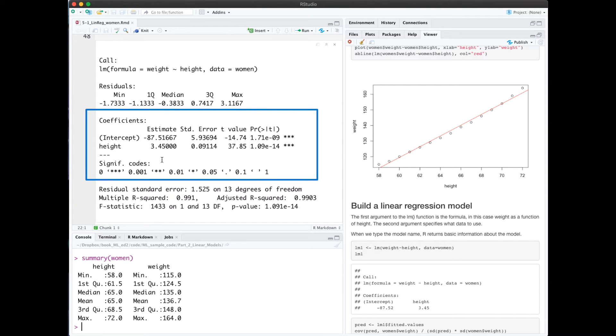This next section of the summary is about the coefficients. We have the estimated value, along with standard error, t-value, and a p-value. The standard error is the estimate of variation.